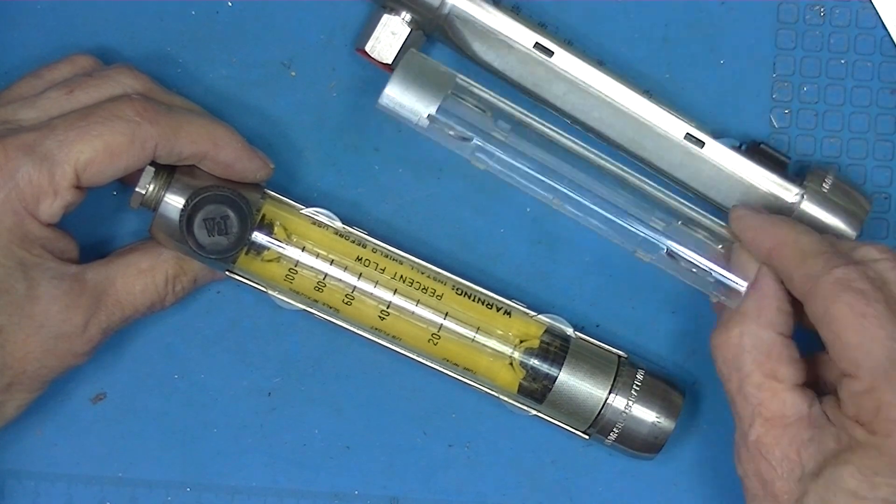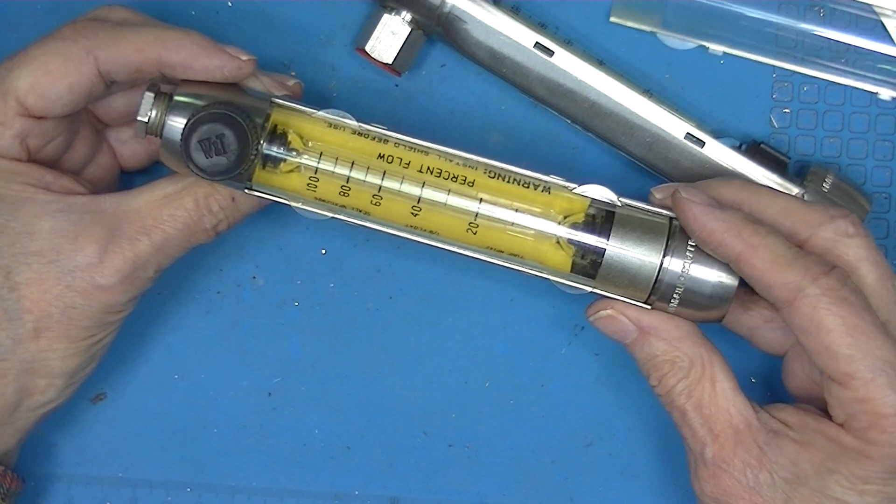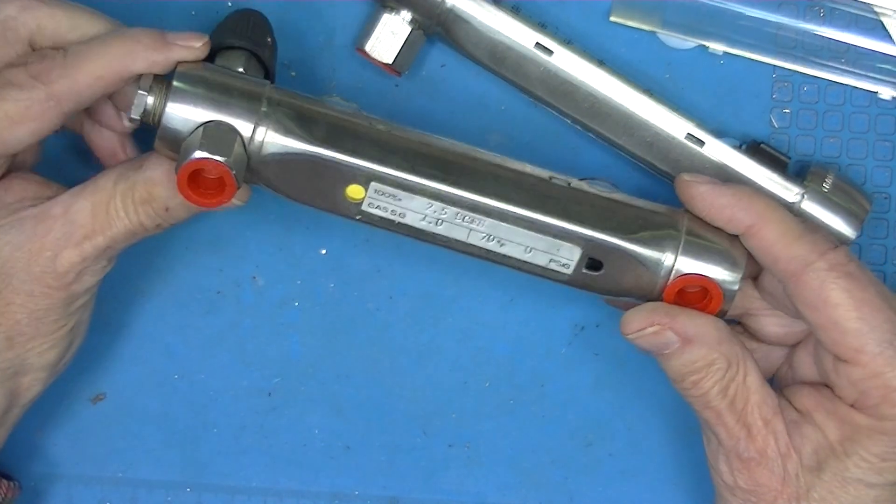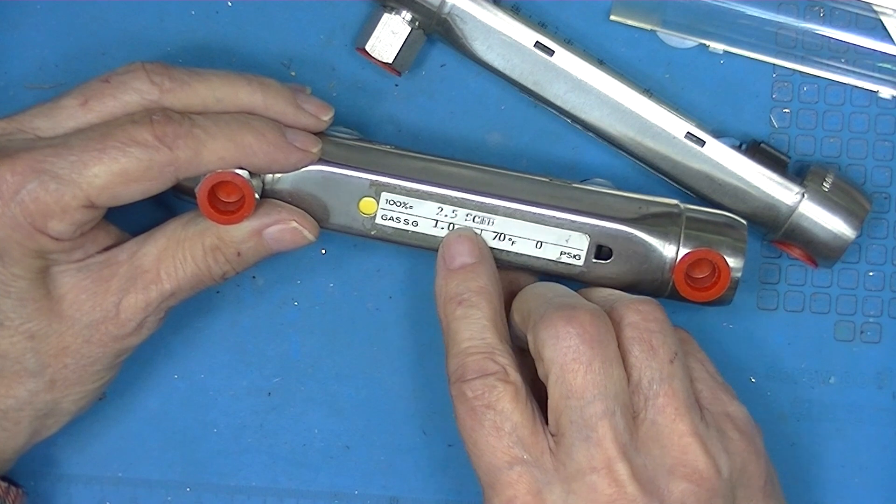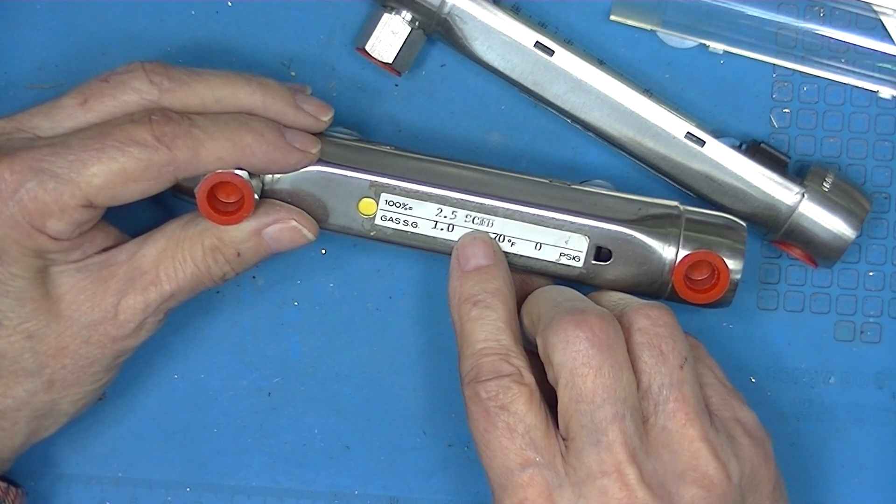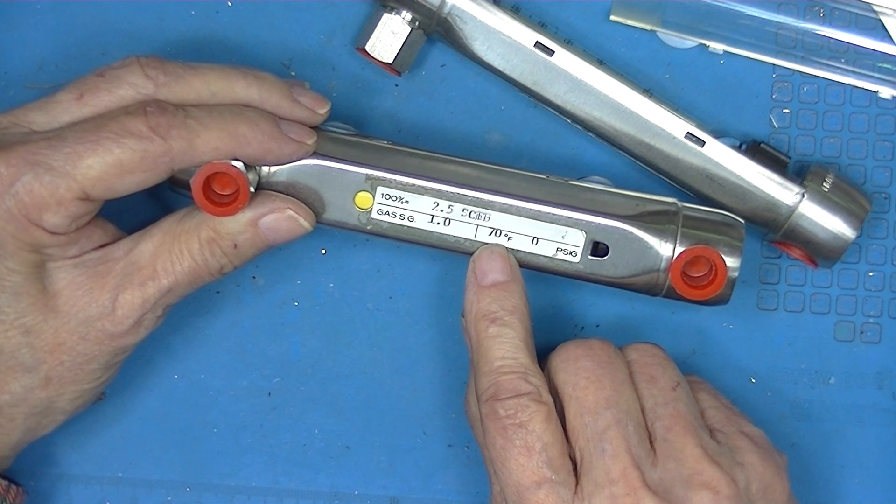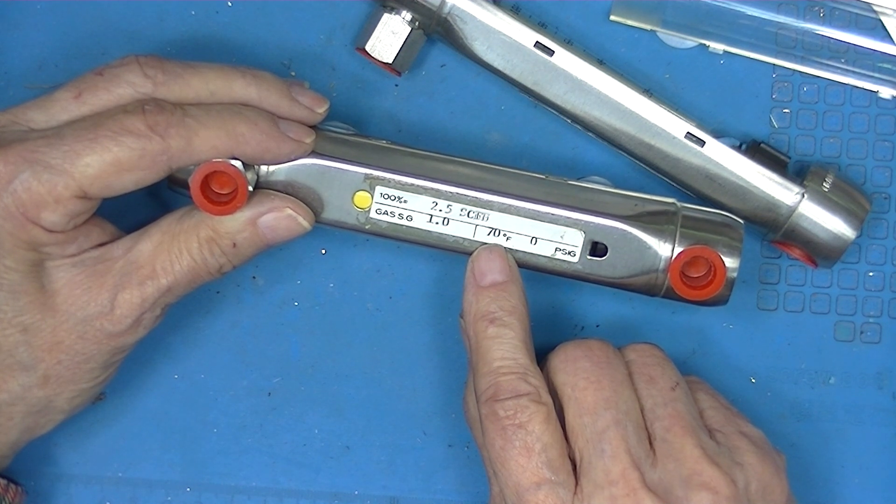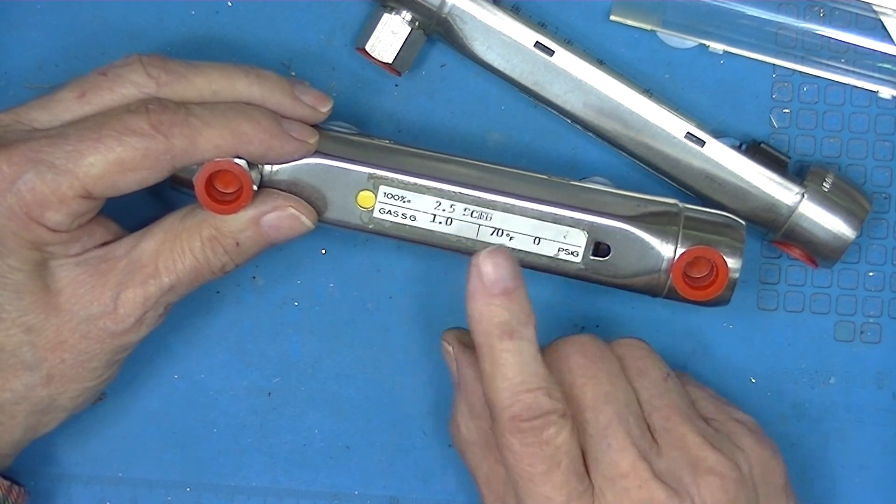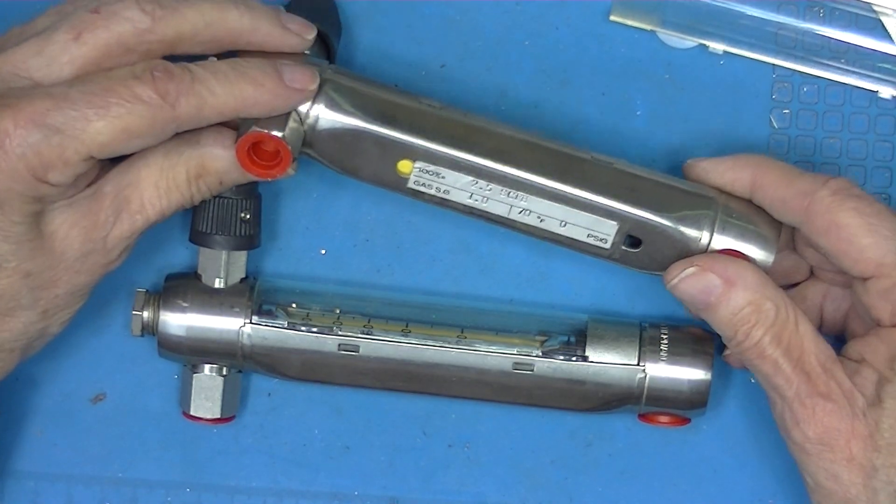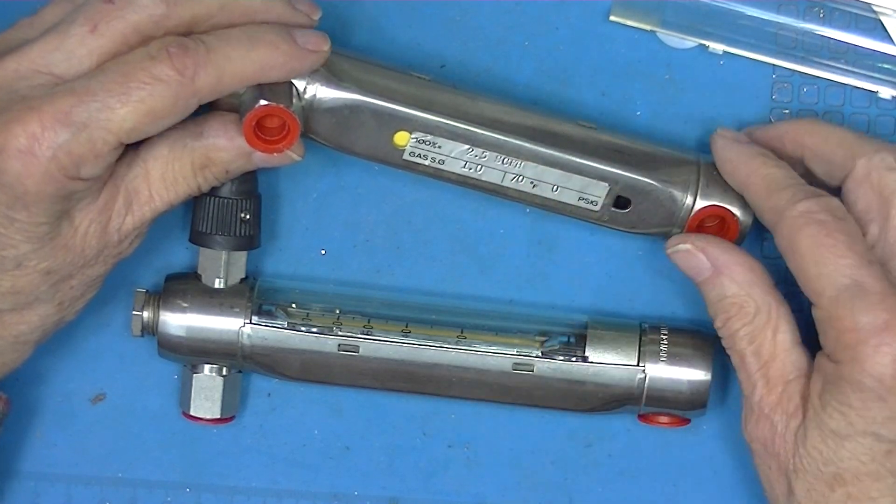I've removed the shield. If you want to know what you're measuring, you need to get behind the flow meter to find out that you're measuring full scale, 100%, 2.5 SCFH of a gas with a specific gravity of one and seventy degrees Fahrenheit and zero psig. I don't know about that. Both meters are identical. Putting this on the back of the gauge is ridiculous.